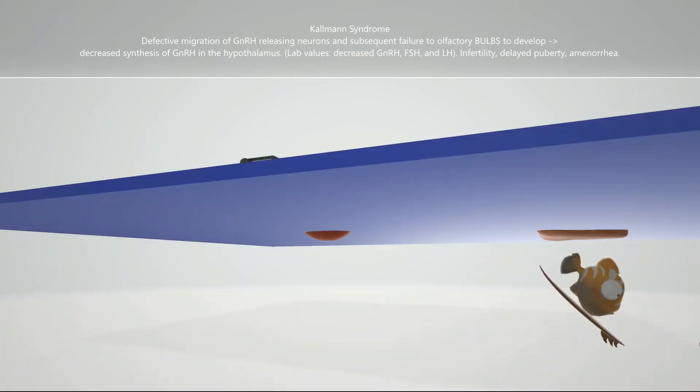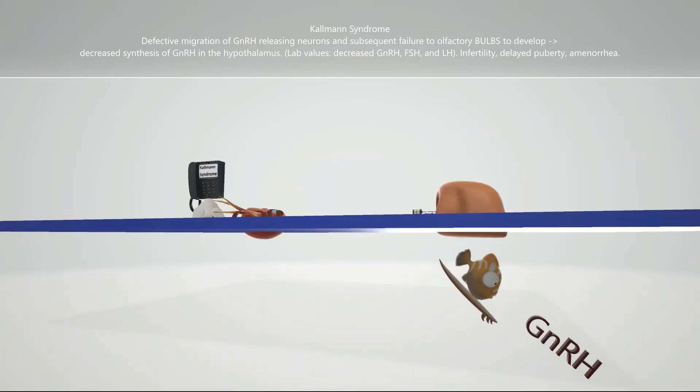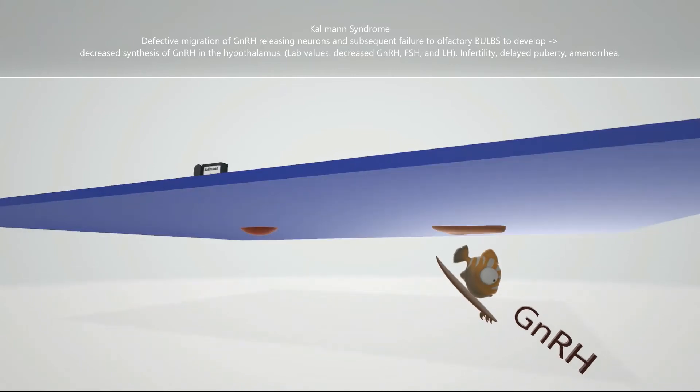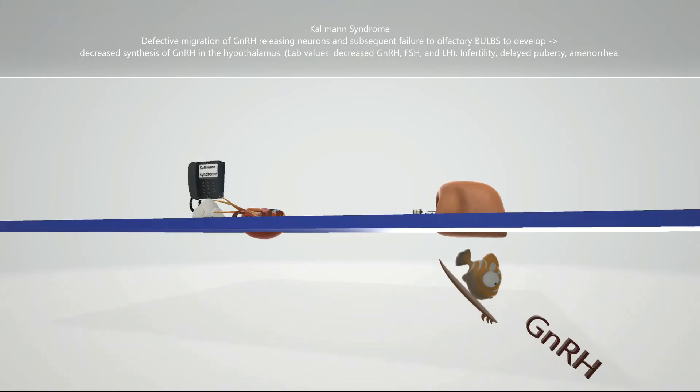Let's take a look under this nose for a minute. This is going to help us remember lab values seen in Kallmann Syndrome. There's going to be a decrease in the synthesis of GnRH in the hypothalamus, represented by the GnRH that the fish is chasing over here. Well, the fish going down, I guess he was scared by the nose,